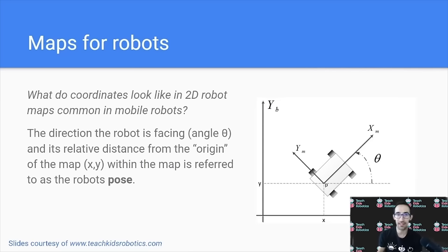Now, what do coordinates look like in a 2D robot map? It's common in mobile robots. So just how we have latitude and longitude for a map. We also have some coordinate system in our robot map as well, and this coordinate is often referred to as pose. Now the pose for a mobile robot could be something like the angle or direction that it's facing relative to some starting point, as well as its offset or x and y position, how far it's moved from that starting point in its map.